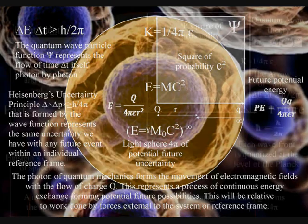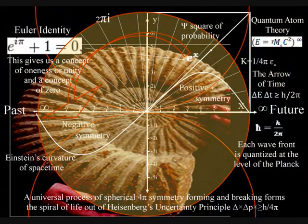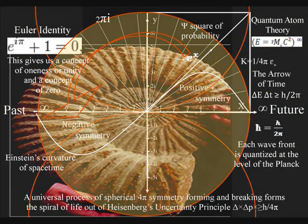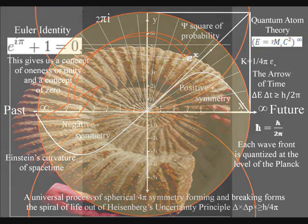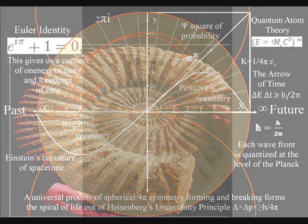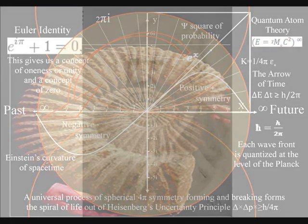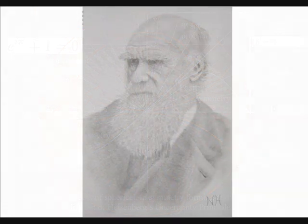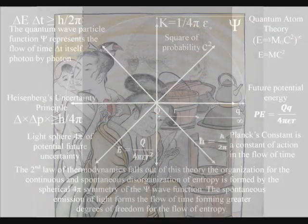This video will put forward the idea that the only reason the universe seems as though it is fine-tuned is because the fundamental physical constants are formed by one universal process, and that Darwin's theory of evolution is based on the geometry and therefore the mathematics of this process.